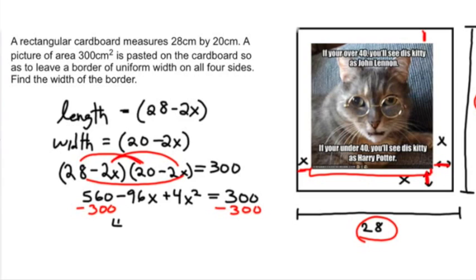And then doing a little bit of rearranging, I get 4x² minus 96x plus 260 equals 0.